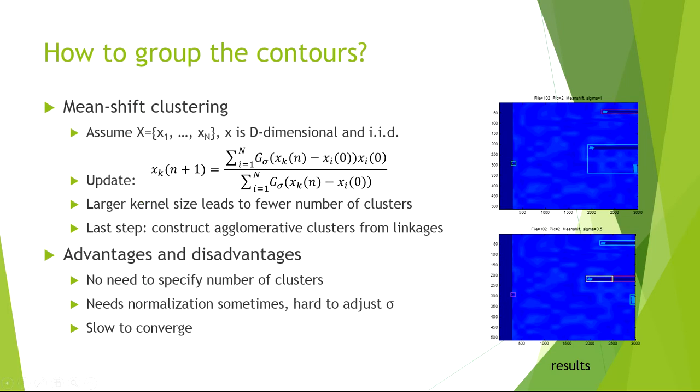If the kernel size is smaller, say 0.05, we may end up with more clusters than actual. So both of them are incorrect. Plus, there are more than 300 images. So finding a single good parameter is difficult here.